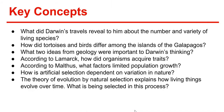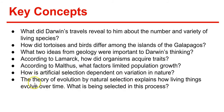Key concepts to review: What did Darwin's travels reveal about the number and variety of living species? How did tortoises and birds differ among the islands of the Galapagos? What two ideas from geology were important to Darwin's thinking? According to Lamarck, how did organisms acquire traits? According to Malthus, what factors limited population growth? How is artificial selection dependent on variation in nature? The theory of evolution by natural selection explains how living things evolve over time — what is being selected in this process? That's it for Chapter 15.